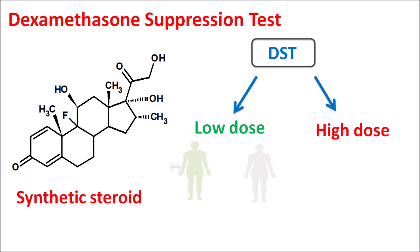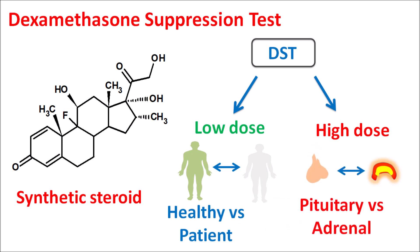In this test, dexamethasone can be given at a low dose or at a high dose. The low dose dexamethasone test is mainly used to differentiate healthy persons from patients, whereas the high dose dexamethasone test is mainly used to differentiate pituitary tumors versus adrenal tumors.